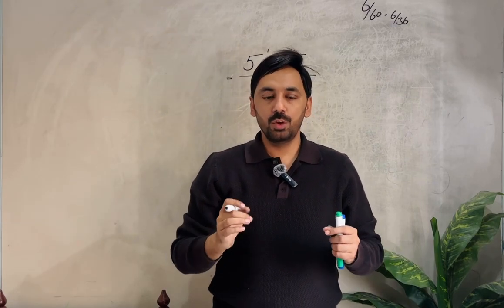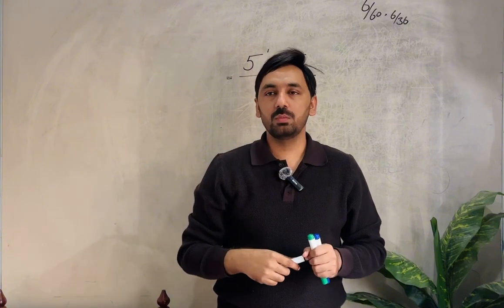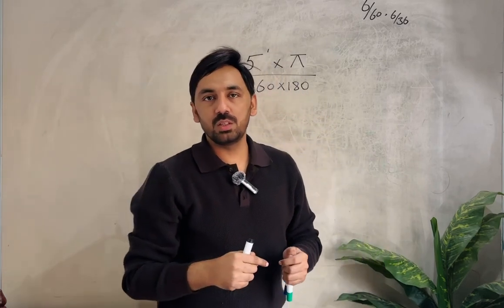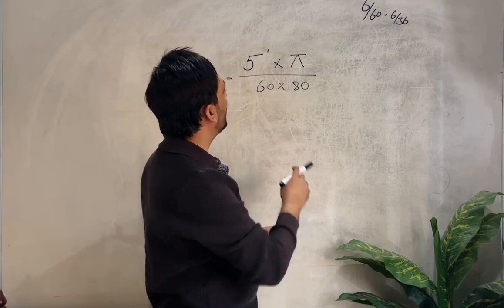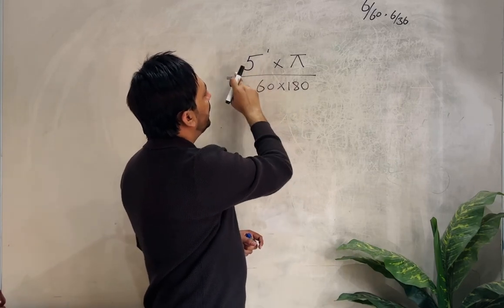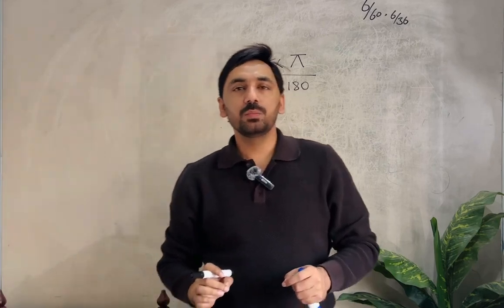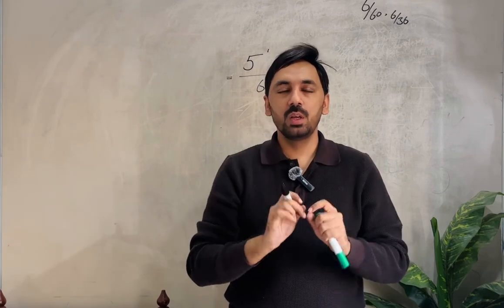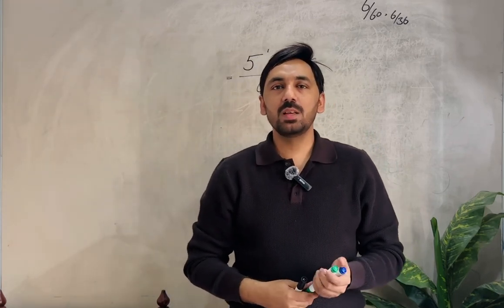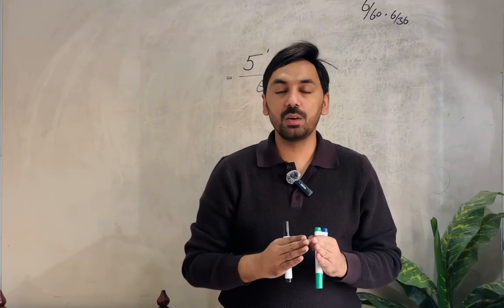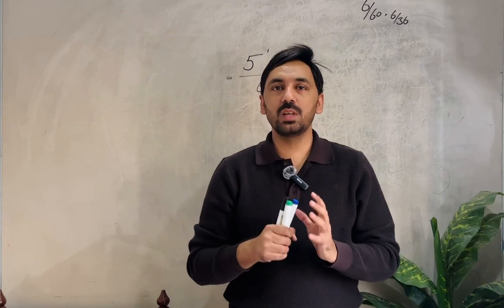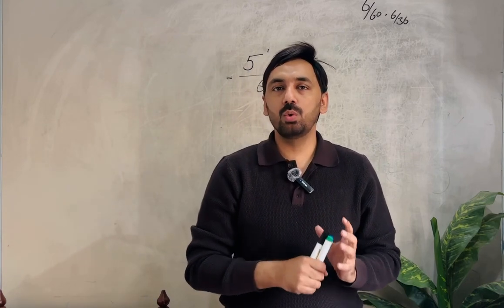If you don't have sufficient knowledge about the minute of arc, watch that video — the link is in the description. This 5 in the formula is actually the minute of arc. Every optotype on the Snellen chart — every complete optotype — makes an angle of five minutes of arc on the nodal point of the patient's eye, as discussed in the last video.